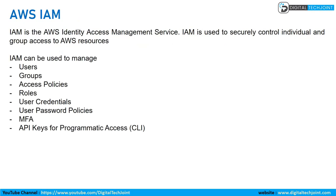AWS IAM stands for Identity Access Management Service. It is used to manage your users, groups, access policies, roles, user credentials, user passwords, multi-factor authentication, and API keys for programmatic access.